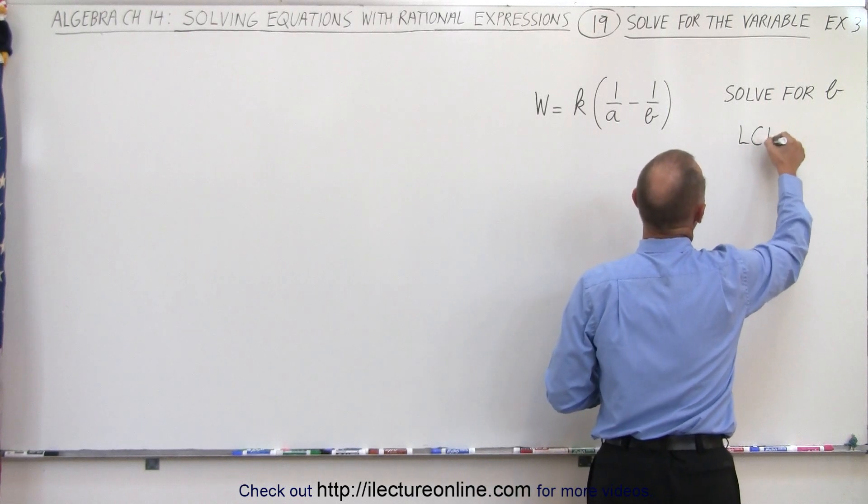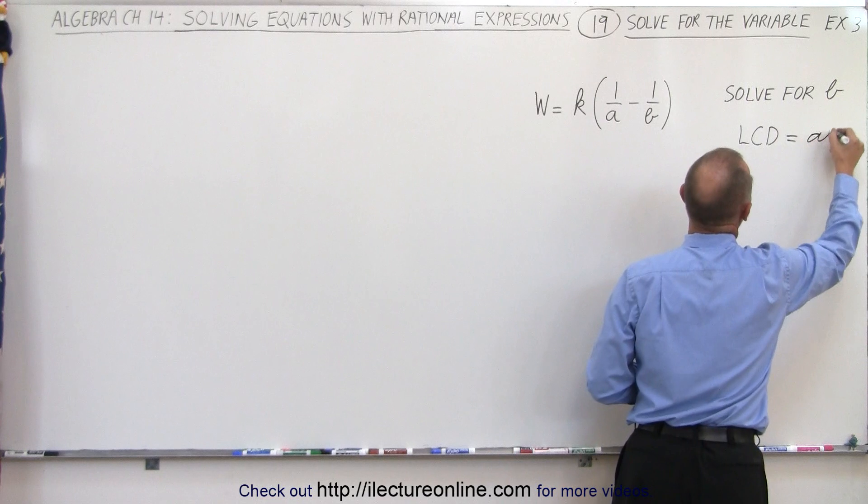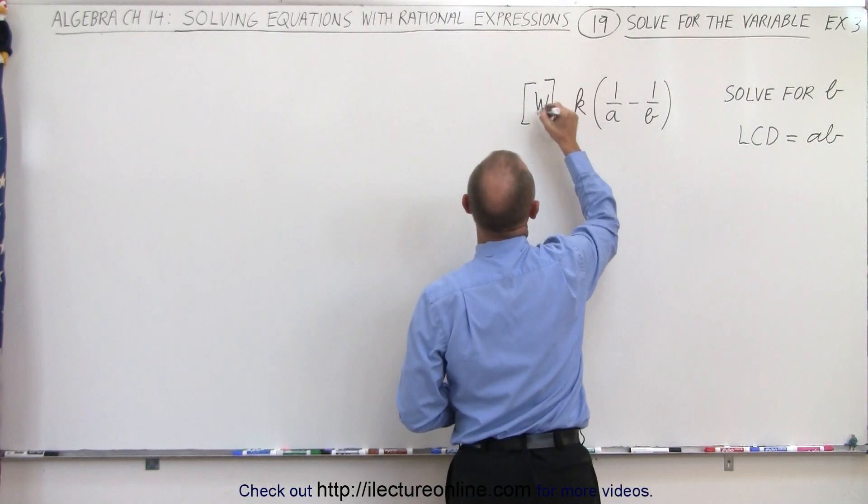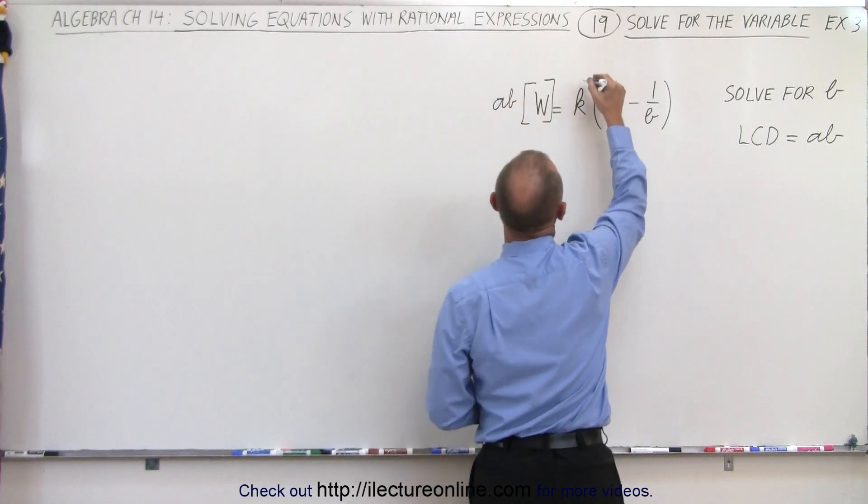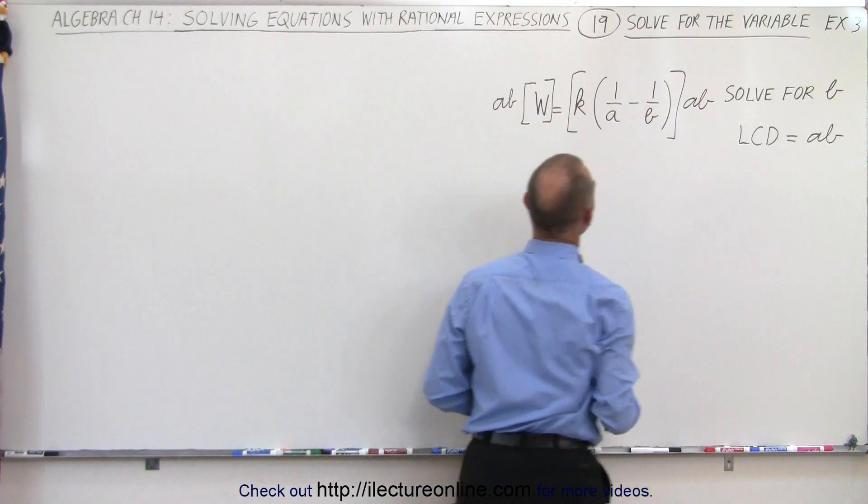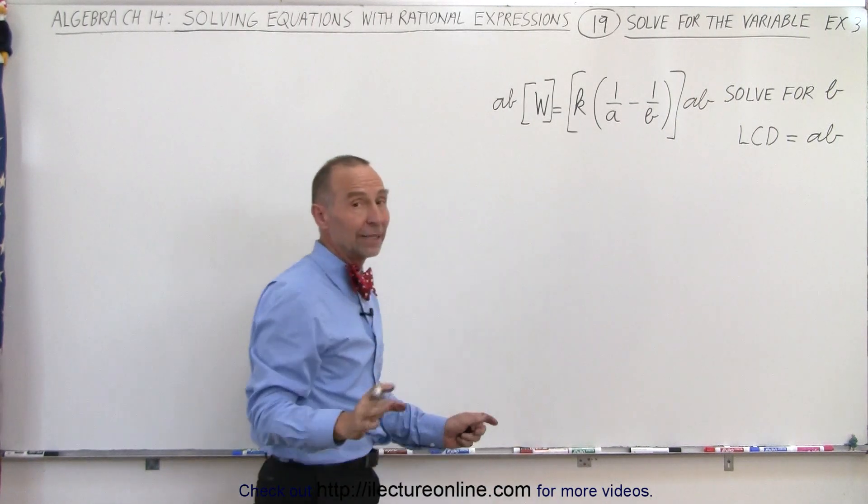In this case, the LCD is simply going to be the product of the two denominators, a times b. So that's what we're going to do. Multiply the left side by a times b, and then we're going to multiply the right side by a times b. That will at least get rid of those fractions. That makes it a little bit easier to deal with.